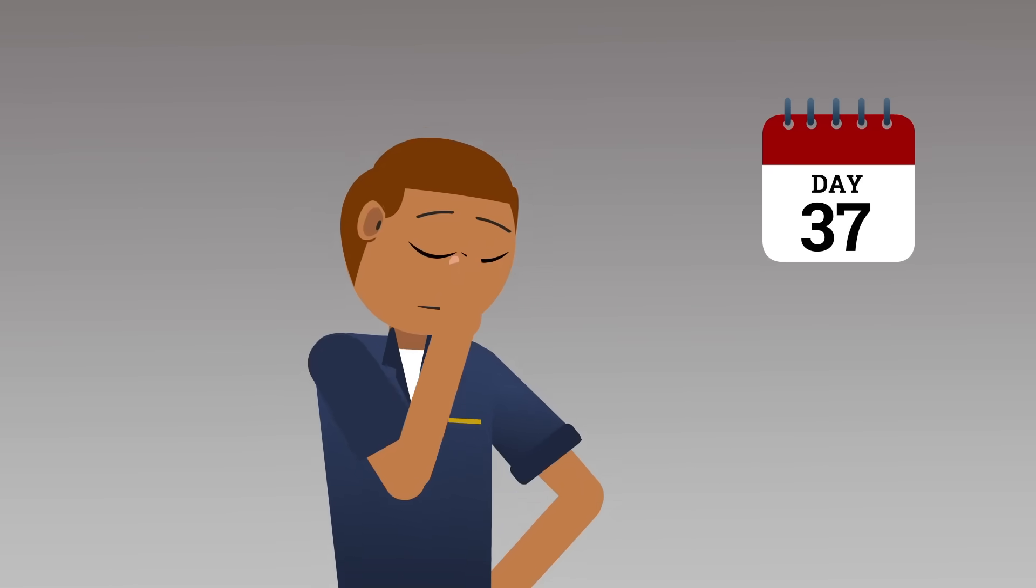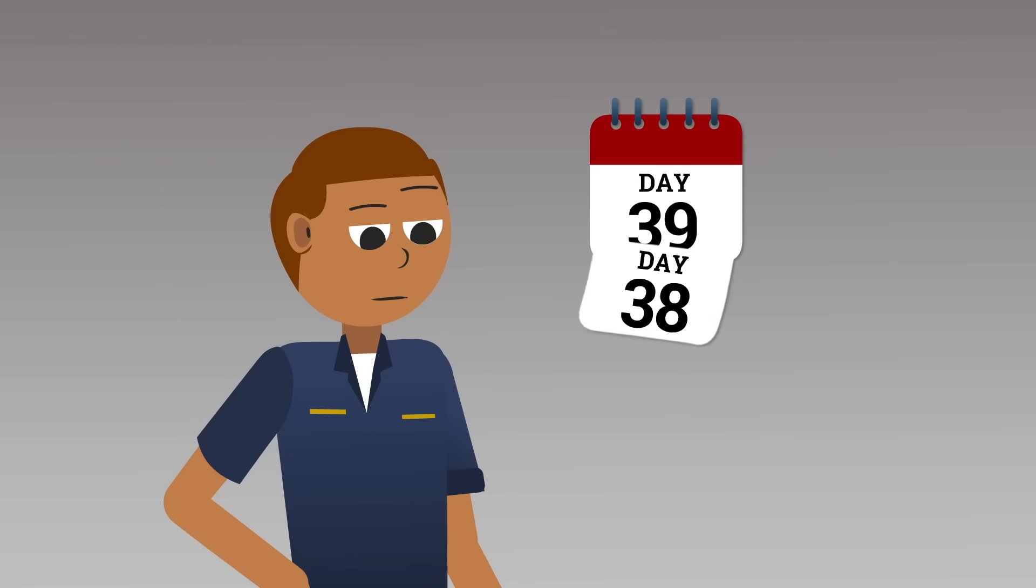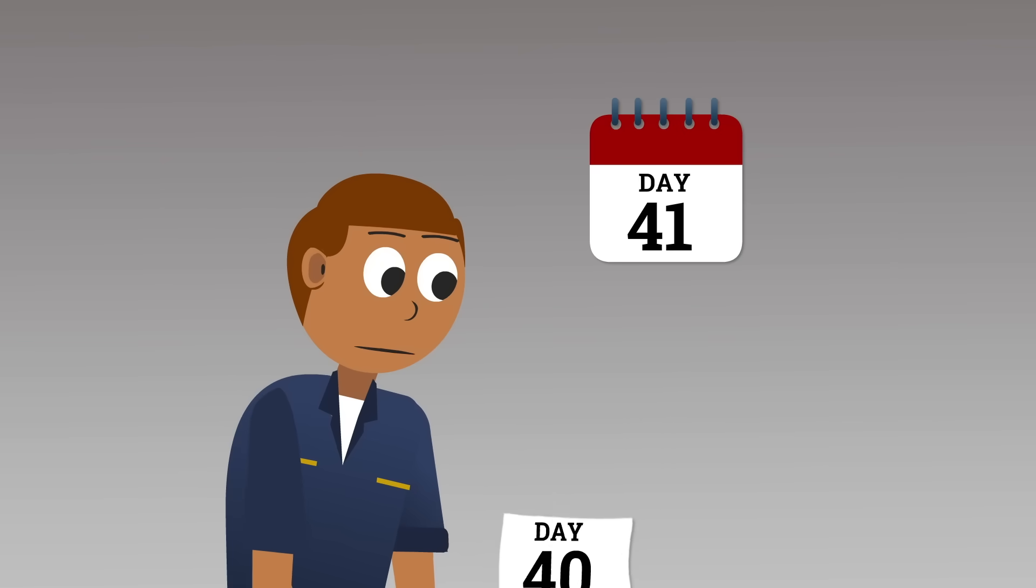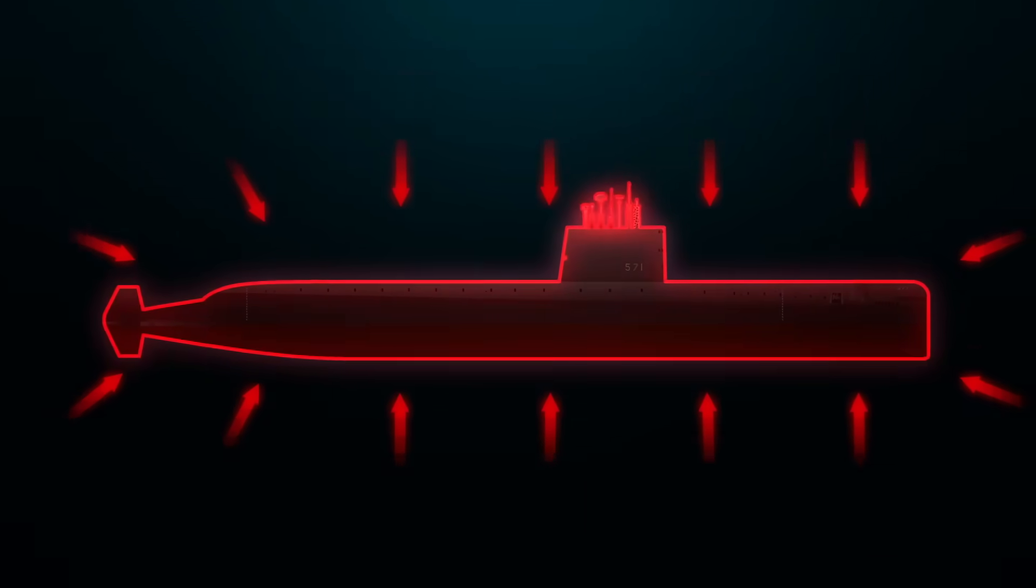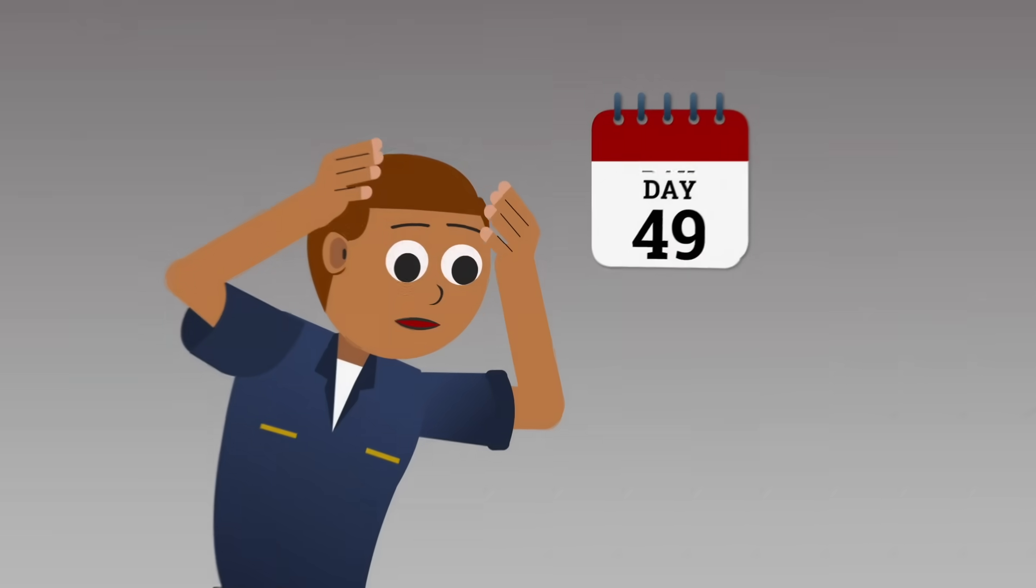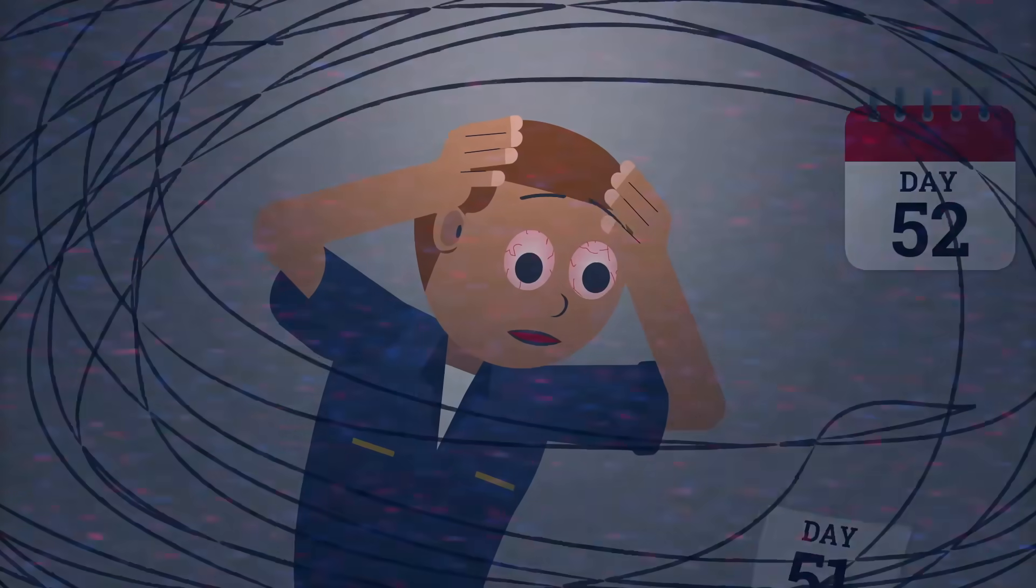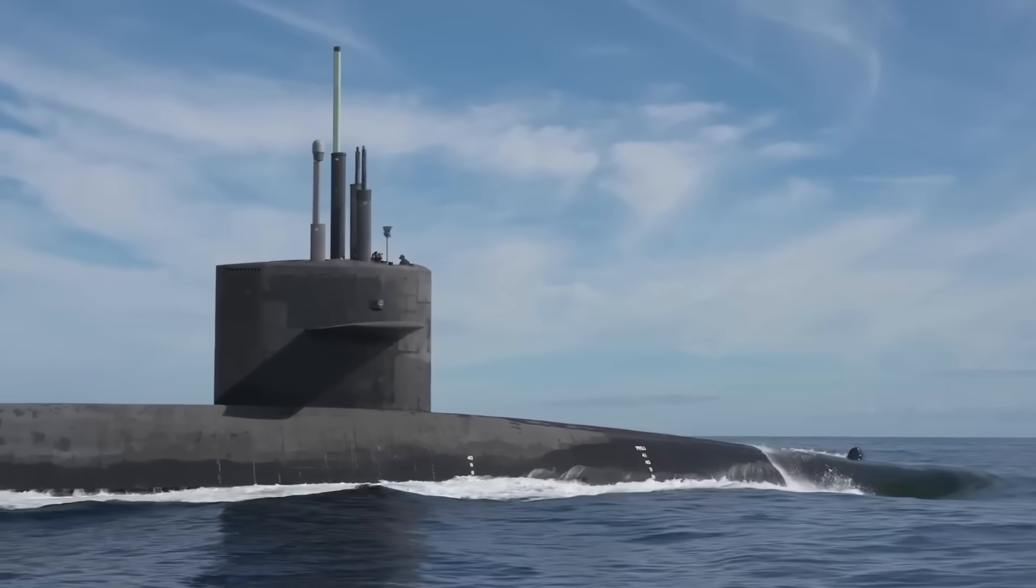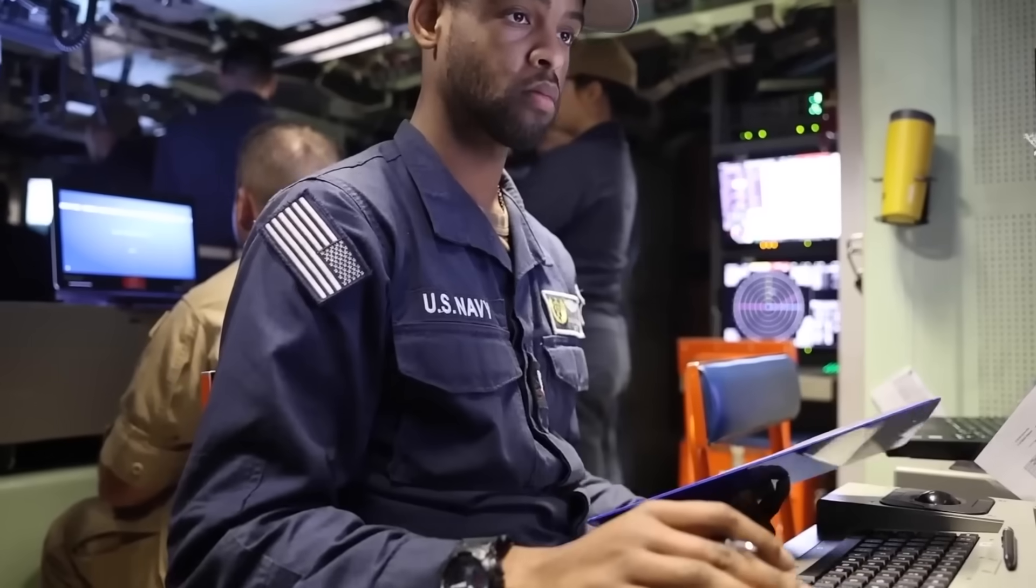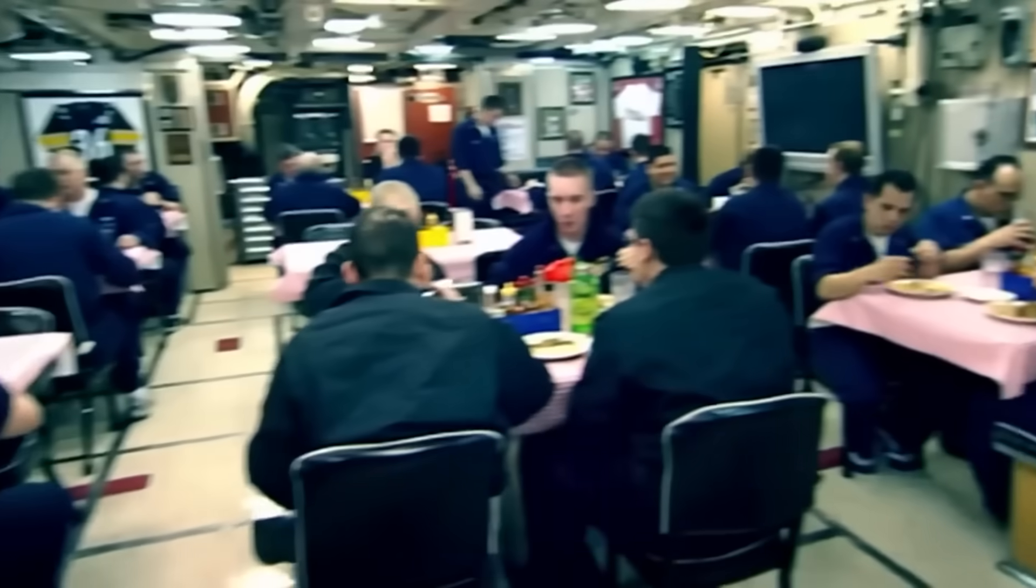For the crew, a long patrol means weeks, sometimes months, without ever seeing the sky. The pressure outside is crushing. The pressure inside is psychological. Most crew members work in rotating shifts, following an 18-hour cycle. Sleep, eat, work, repeat, regardless of whether it's night or day above the surface. In many subs, bunks are hot-racked, meaning one bed is shared between two or three sailors, who use it in turns, of course.